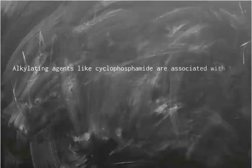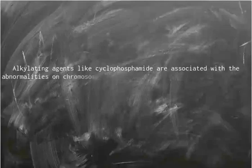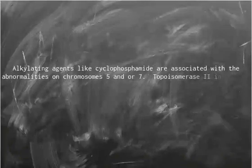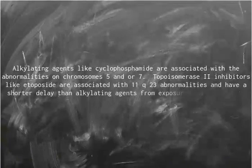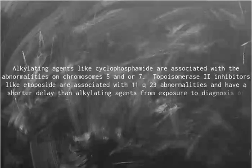Alkylating agents like cyclophosphamide are associated with abnormalities on chromosomes 5 and/or 7. Topoisomerase 2 inhibitors like etoposide are associated with 11q23 abnormalities and have a shorter delay than alkylating agents from exposure to diagnosis of Myelodysplastic Syndrome.